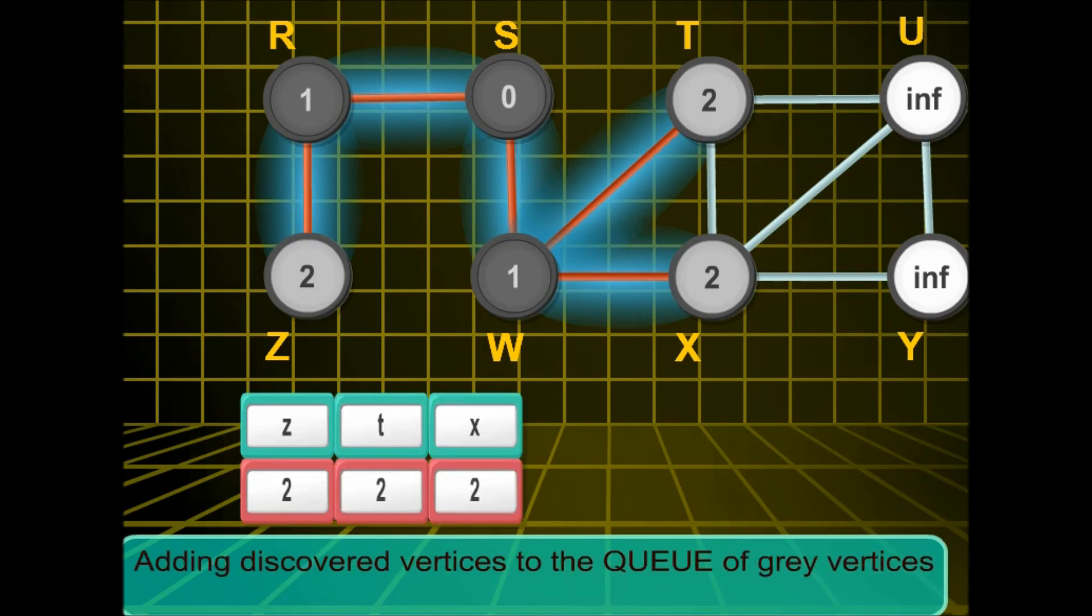Notice that t and x have been updated with their distance from s as 2. And as we enqueued t and x, the next to be dequeued is z. So we'll be looking for the neighbours of z in the next step.